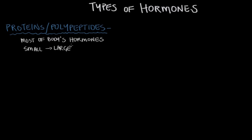These hormones can range from small collections of amino acids all the way up to hundreds and hundreds of amino acids, so they can get quite large. The break point is right around a hundred, and that's where we shift from calling them polypeptides to proteins. Just like all proteins in your body that are going to be excreted, protein and polypeptide hormones are made in the rough endoplasmic reticulum — or RER — of the cell.